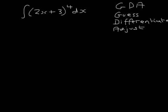Let's have an example of how this works. Looking at the integral of (2x + 3) to the power of 4, I'm going to guess that it's something to do with (2x + 3) to the power of 5, because when you integrate, the power increases by 1. What I'm now going to do is differentiate this and see what happens.